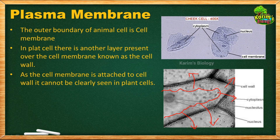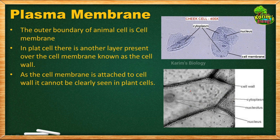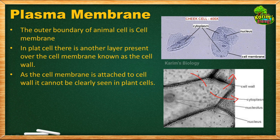Once the cell membrane is separated from the cell wall, you can observe it under a light microscope. The question is: how can we artificially perform plasmolysis of a cell? The simple principle is: if you place a cell in a concentrated salt solution, there will be a higher concentration outside than inside the cytoplasm. Because of this concentration difference, water from the cytoplasm comes out, the cell becomes flaccid, and the cell membrane gets separated from the cell wall.